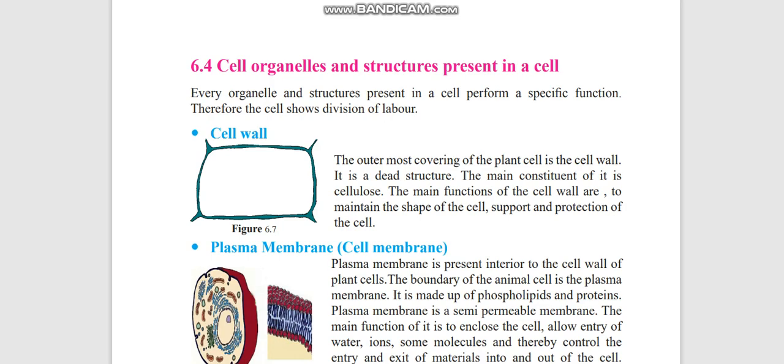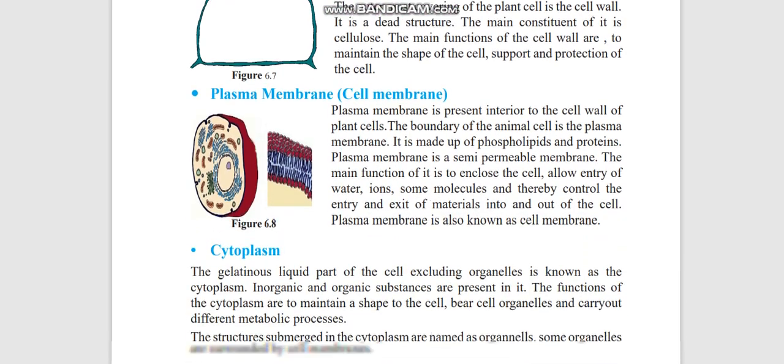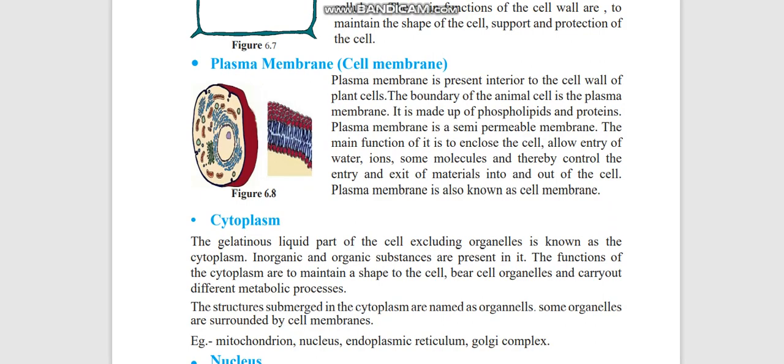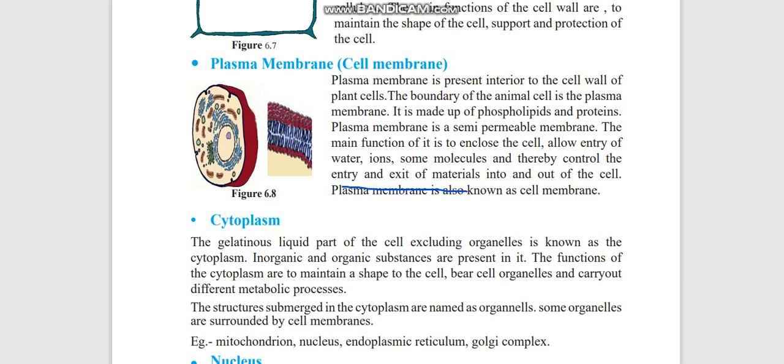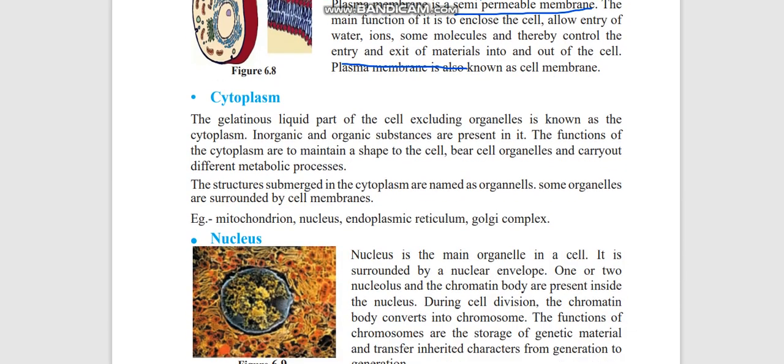Plasma membrane is present in both animal cell and plant cell. Another name is cell membrane. The main function of plasma membrane is to take the materials in and out, entry and exit of materials. This plasma membrane is made up of phospholipids and proteins, and it is a semipermeable membrane, allowing the substances to pass and go out.